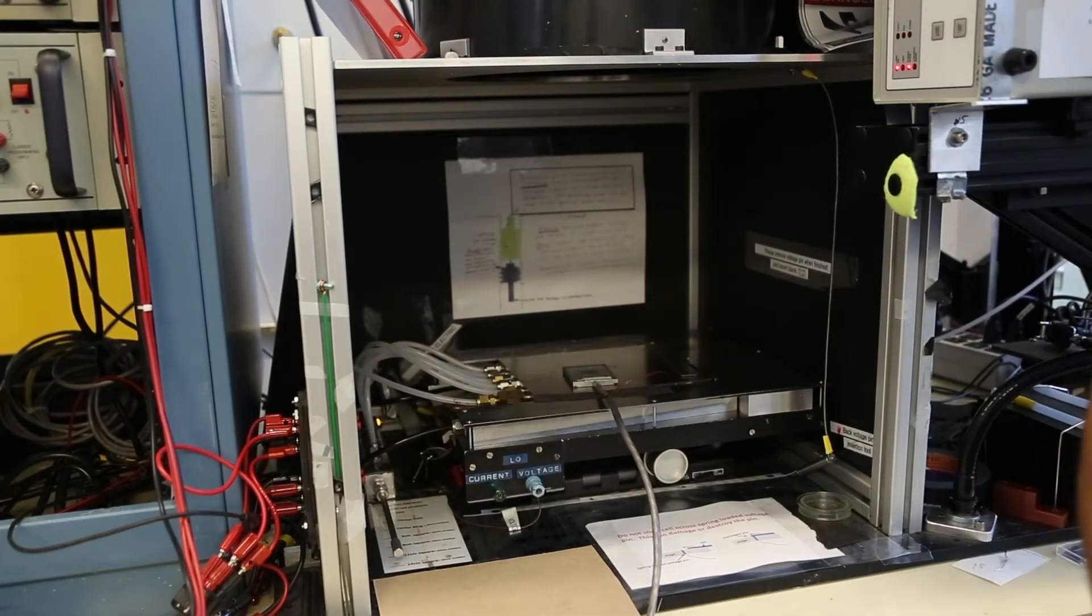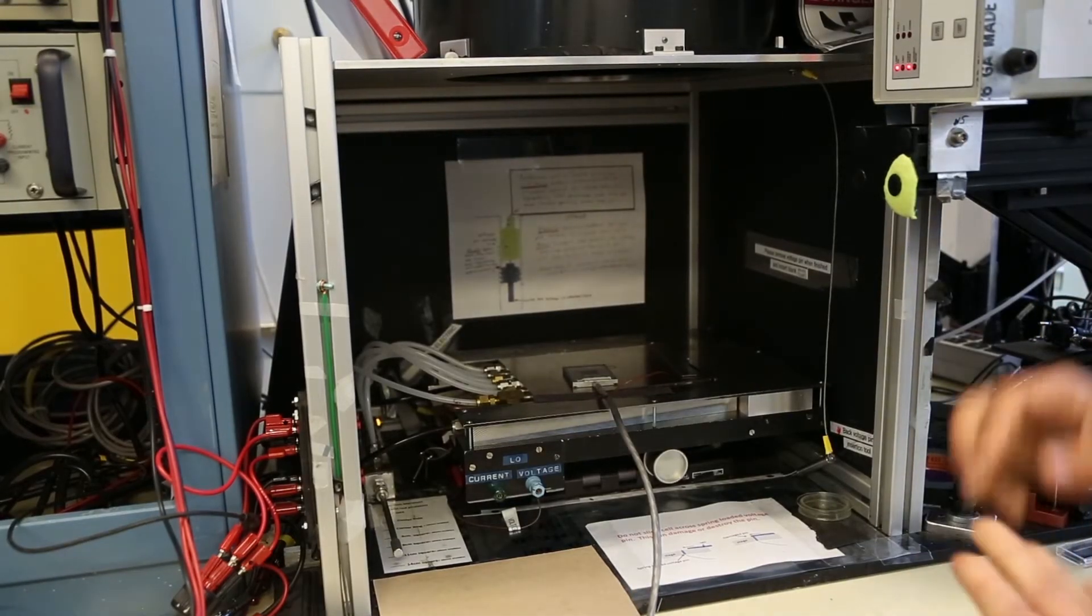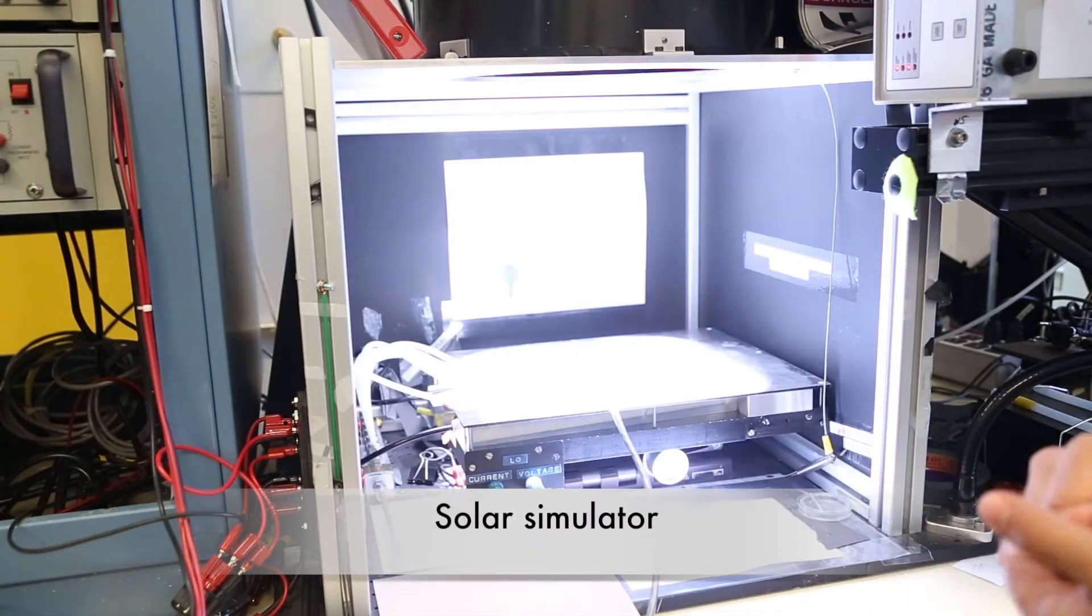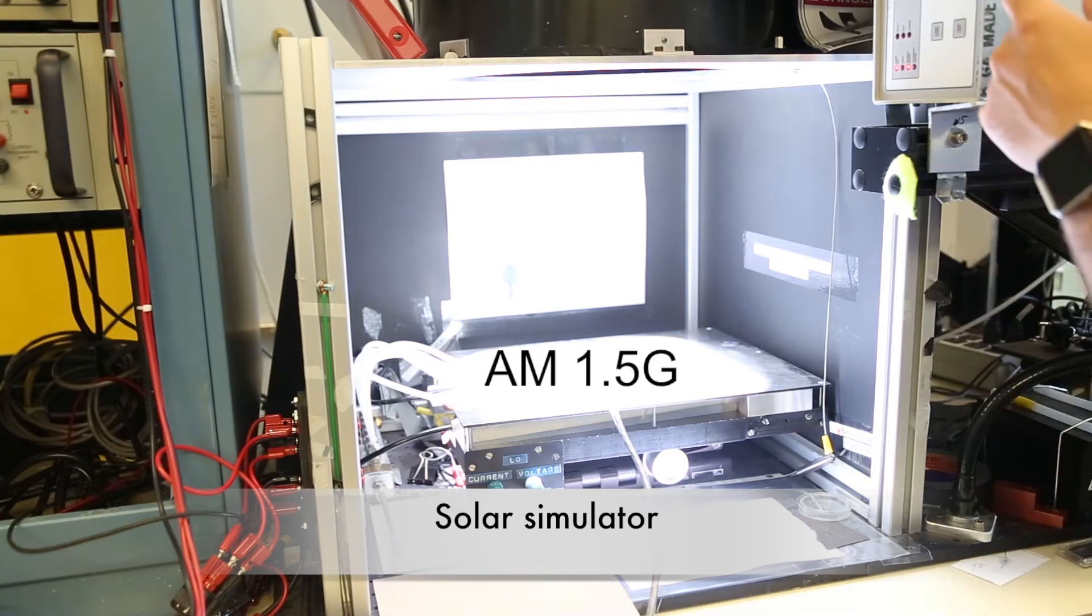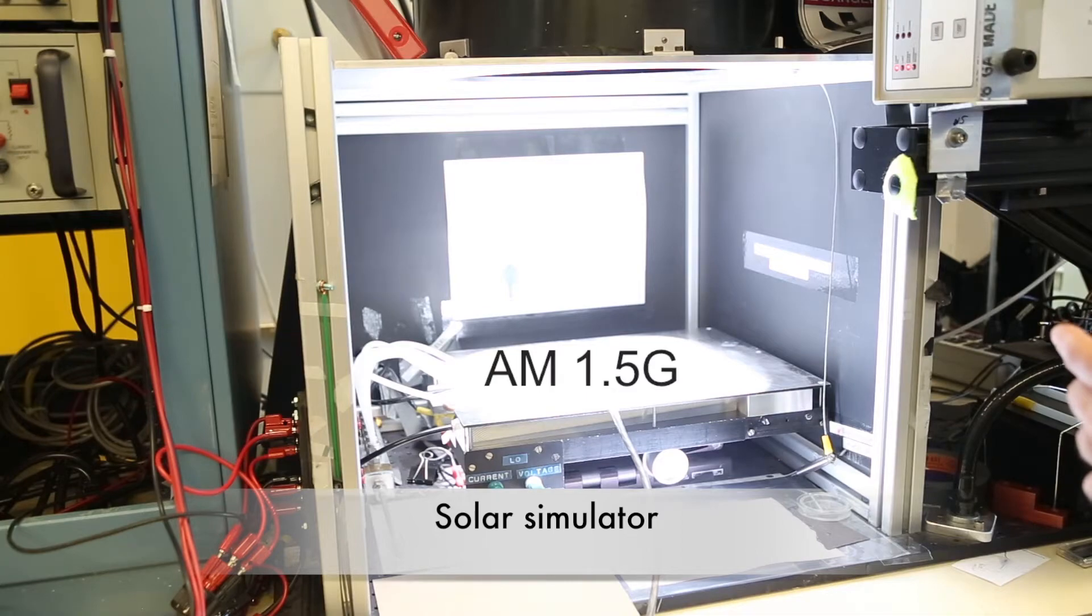Measuring solar cell performance consistently everywhere in the world requires an indoor solar simulator. For most measurements, the solar spectrum is standardized as Airmass 1.5 Global, or AM 1.5G, which represents the average solar spectrum in temperate climates.